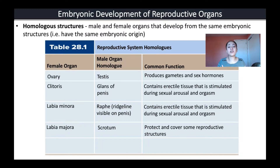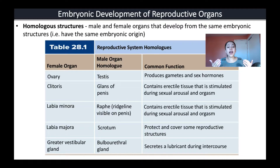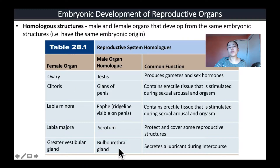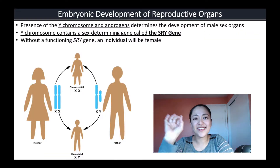We also have the labia majora and the scrotum, which are homologous structures that both protect and cover some of the reproductive structures. Finally, two organs both secrete a lubricant during intercourse: in females this is called the greater vestibular gland, and in males this is called the bulbourethral gland, or Cowper's gland.